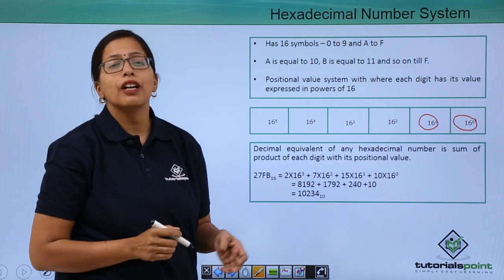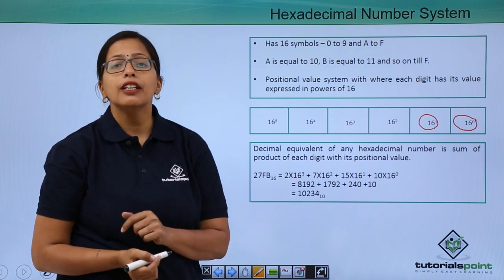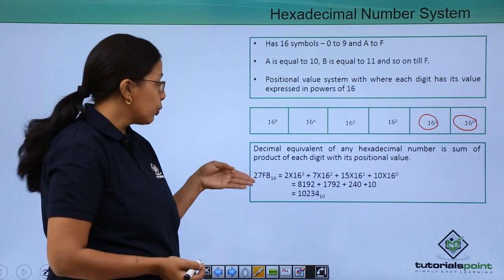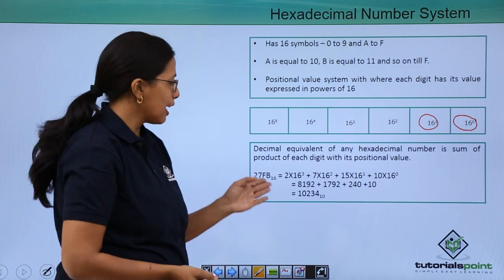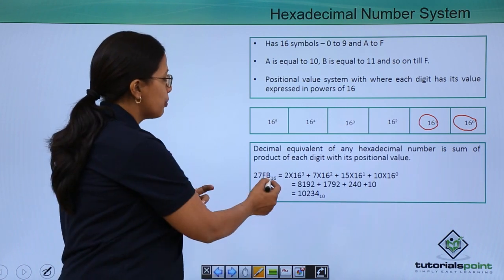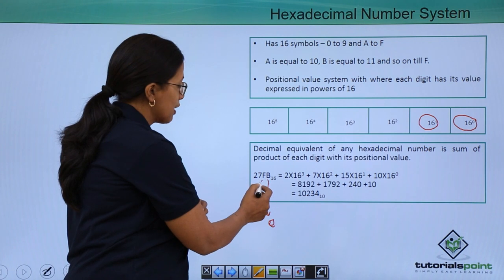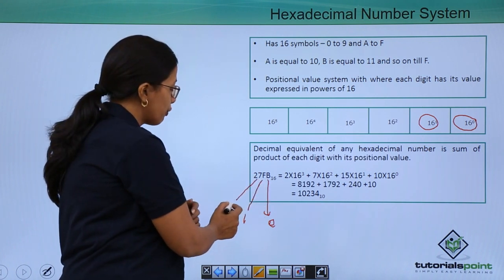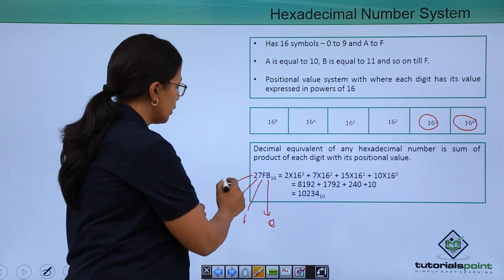Let's take an example of a hexadecimal number and see how it can be easily converted to a decimal number system. I have a number here 27FB to the base of 16. As you can see, B has a position of 0 here, F has a position of 1, 7 has a position of 2 and the number 2 has a position of 3.